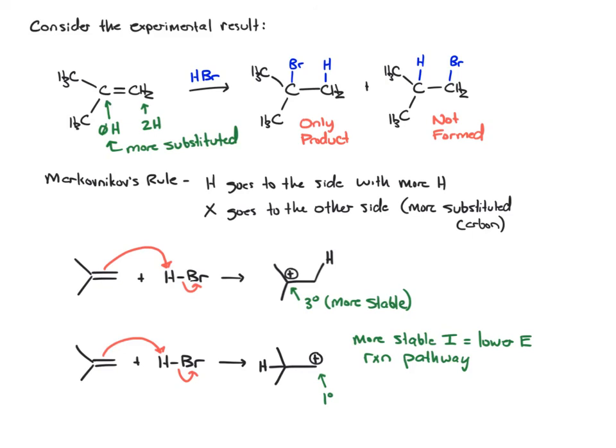From there, we can finish up the mechanism. We have the bromide that was produced in that first step. That will come in and attack the tertiary carbocation, giving us the H and the Br.